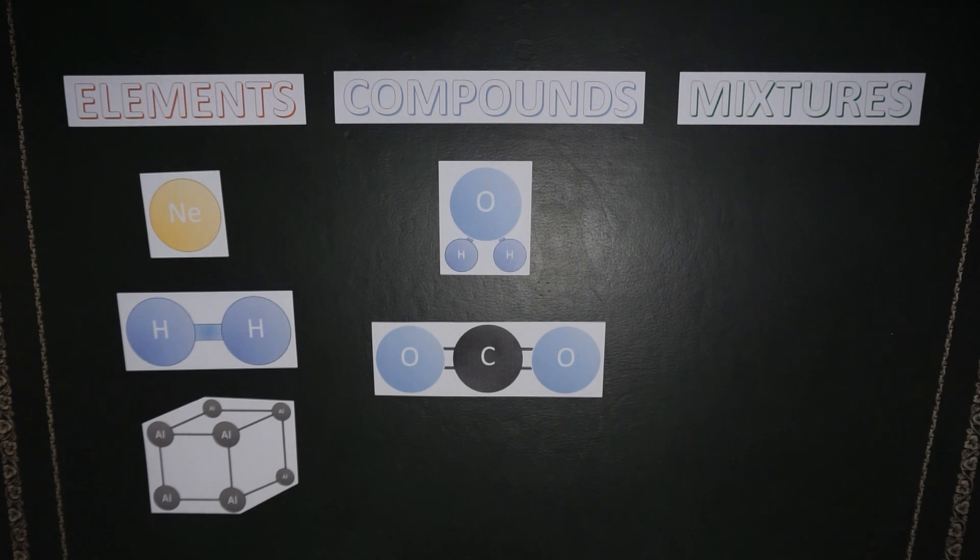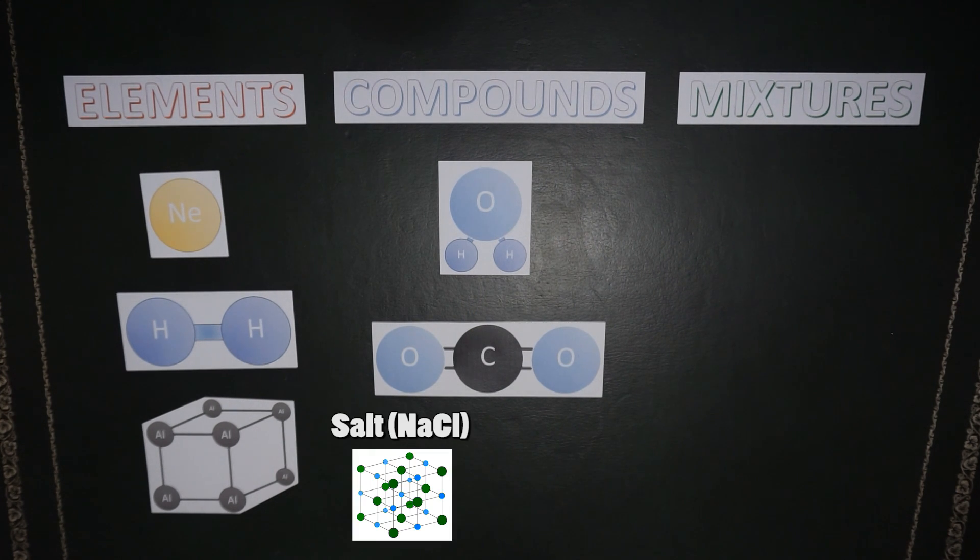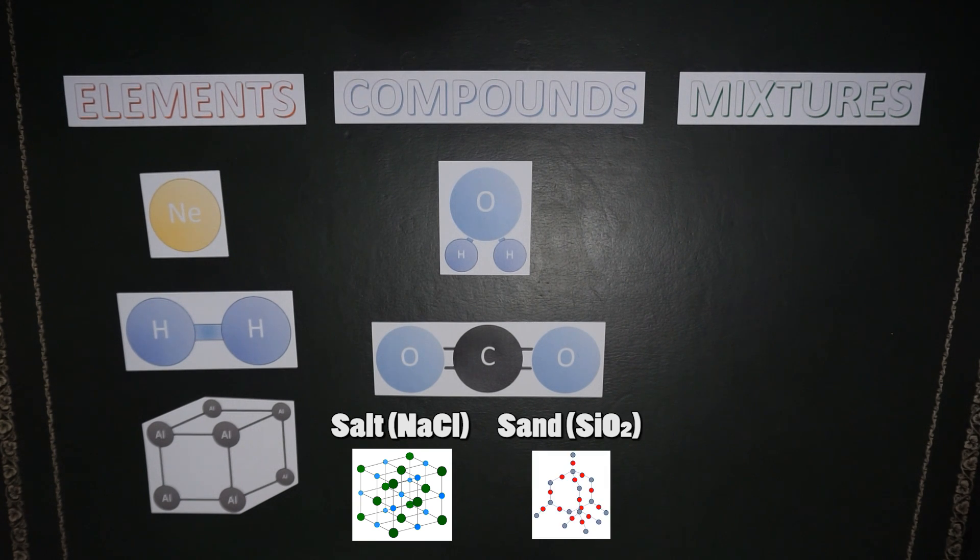We can also have compound lattices. Salt, for example, is sodium chloride and sand is silicon dioxide. Both of these compounds tend to form these 3D crystal lattice structures.